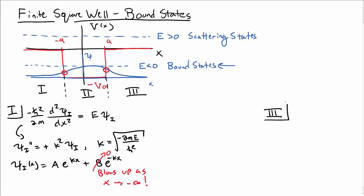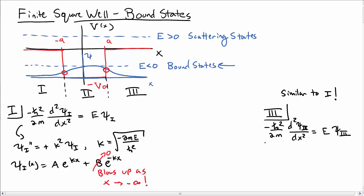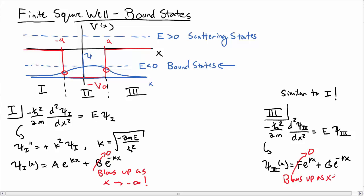In region 3, the process is essentially the same. Recalling that it's going to be similar to region 1, we get a differential equation from Schrödinger's equation that looks essentially the same with E psi 3. So let's just jump down to writing the solution as f e to the kx plus g e to the minus kx, where k is the same. In this case, f must be equal to zero, because that term would blow up as x goes to positive infinity, and I want a normalizable wave function. So that's regions 1 and 3.